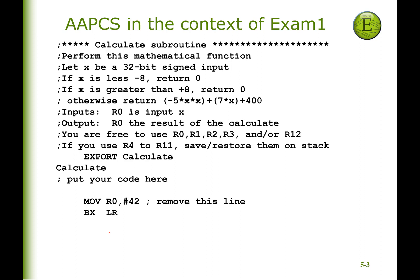I want to show you the context of ARM Architecture Procedure Call Standard as you do your first exam. Here's a typical exam 1 question that you'll write in assembly language. Notice that there's a single input parameter, and it is in R0. In this particular function it's a number — that's a call by value — and that value is in R0. There is also a single return parameter, and it's also in R0. That's the standard: one parameter passed in R0, one parameter returned in R0.